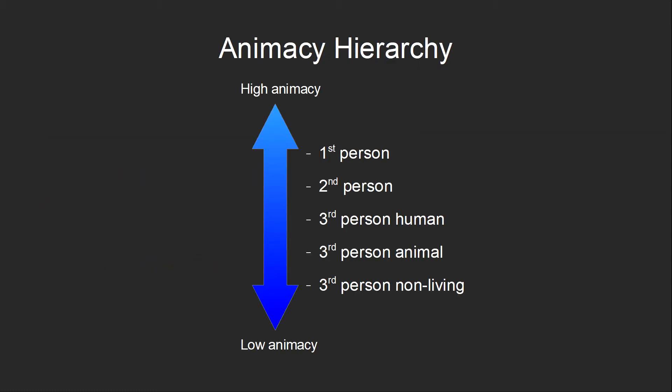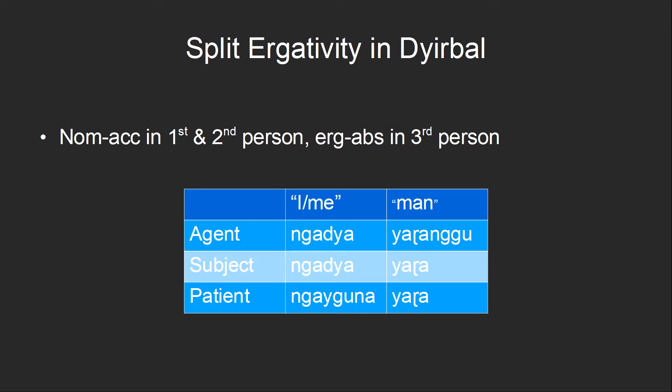It's also common for ergativity to be split based on person. We have the idea of an animacy hierarchy, which ranges from highly animate — first person — down to low animate — third person, non-living. Things that are higher on the animacy hierarchy are more likely to use a nominative-accusative alignment; things that are lower are more likely to use ergative alignment. An example of a language with split ergativity based on person is the Gerbil language, spoken in northern Queensland in Australia. It has nominative-accusative alignment in the first and second person, and ergative-absolutive alignment in the third person.